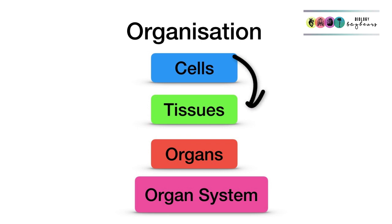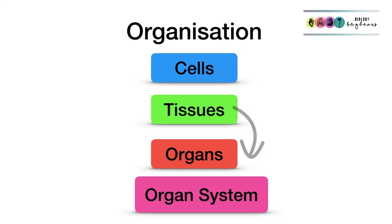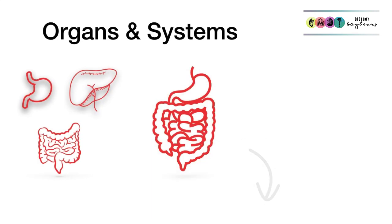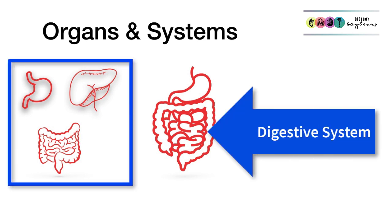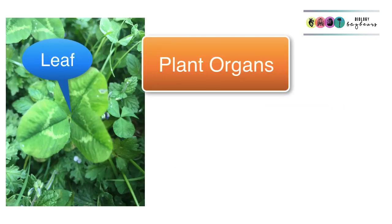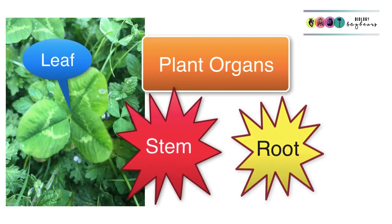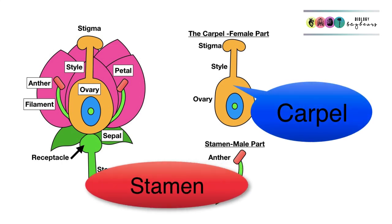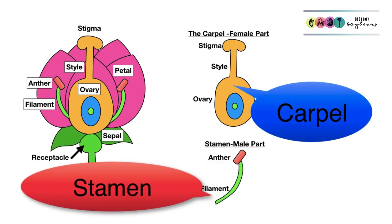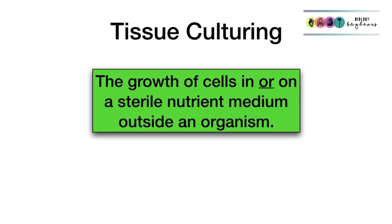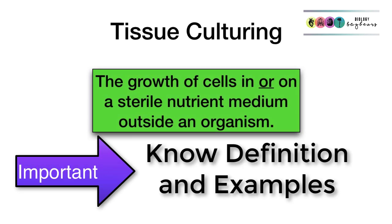This chapter is all about organisation: how groups of similar cells become tissues, groups of tissues form organs, and groups of organs form organ systems — as in the case of the digestive system, made up of all those separate organs. Plants also have plant organs; for example, the leaf, the stem, and the root. The flower houses the male reproductive organs, the stamen, and the female reproductive organs, the carpel.